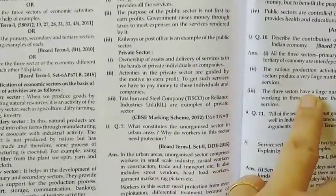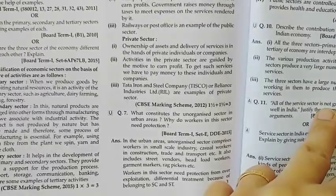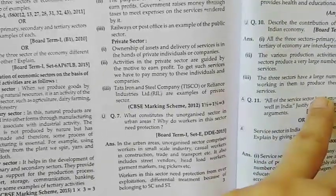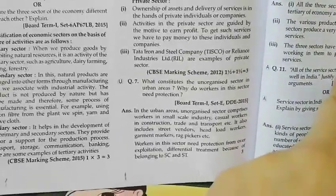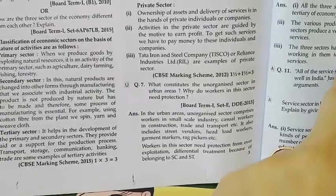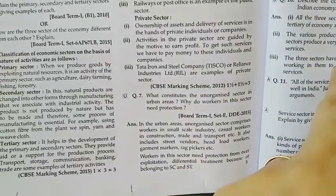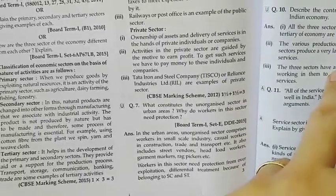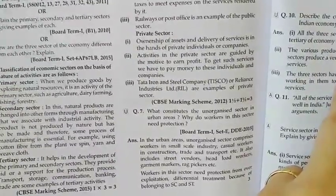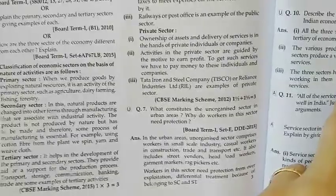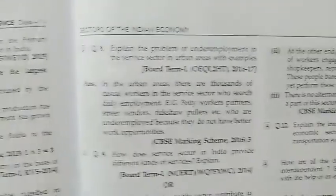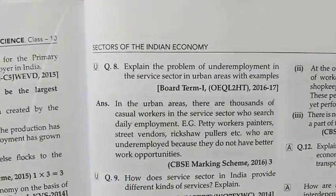The next question is: what constitutes the unorganized sector in urban areas and why do workers in these sectors need protection? Here you can write down that workers in small-scale industries, casual workers, trade and transport workers, street vendors, and garment makers are all part of the unorganized sector in urban areas. They need protection because the maximum number of people in the unorganized sector lack job security and benefits. The next question is: explain the problem of underemployment in the service sector in urban areas.